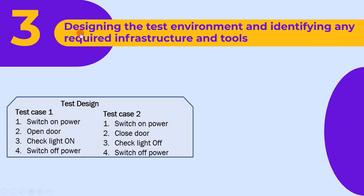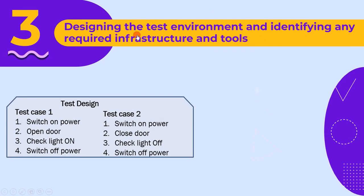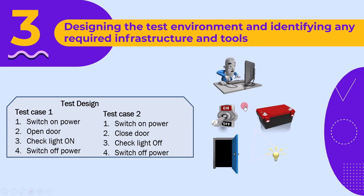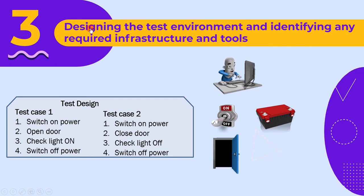The third activity is designing the test environment and identifying any required infrastructure and tools. This point is similar to the last one. In the test design stage, we identify the infrastructure required for planned testing. For example, to test a test case we need a computer, battery, door, and light. The important point here is that we only identify the test environment in the test design stage. Therefore, the third activity of test design is designing the test environment and identifying any required infrastructure and tools.